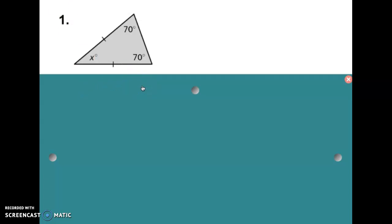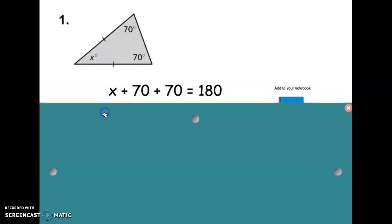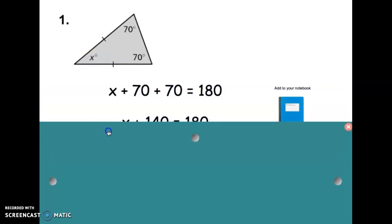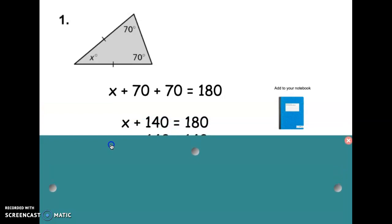So, to do this, we're just going to use algebra. We don't know this one. It's X. It's unknown. So, we're going to say X plus 70 plus 70 is 180. Now, you know how to solve that equation.